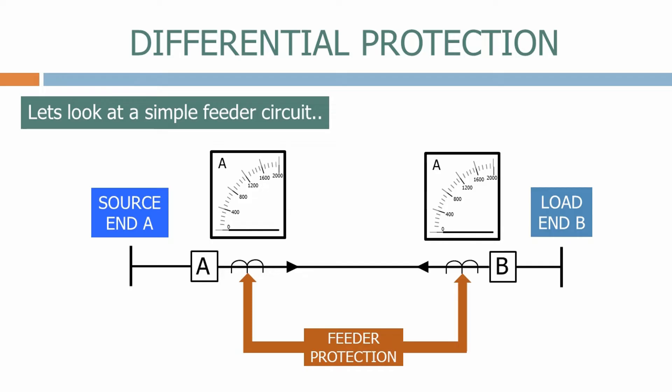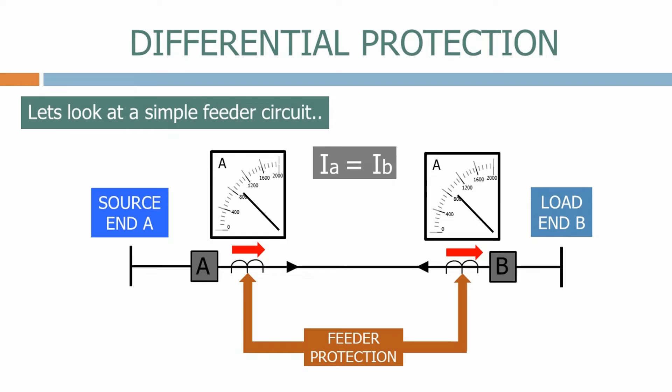Let's now close the circuit breakers. Current will now flow from the source through the current transformers at End A, along the feeder and through the current transformers at End B. The magnitude of the current will depend on the loads applied at End B. Regardless of the current magnitudes, if the system is healthy, the current flowing through End A will equal the current flowing through End B.